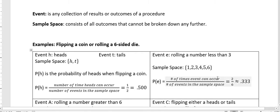So the number of times my event can occur, well, a number less than three would be one or two. So there's two chances that I can get something that's less than three. So that's the number on top. And then the number of sample space is six. So I have two out of six chance of getting a number, of rolling a number less than three in one single roll of die.